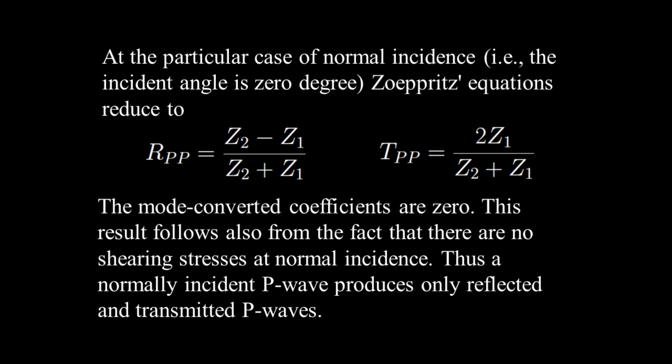Note that RPS and TPS are zero — in other words, the mode-converted coefficients are zero. This result follows from the fact that there are no shearing stresses at normal incidence. Thus, a normally incident P wave produces only reflected and transmitted P waves. These relationships are useful when analyzing P wave behavior through layer-cake media at nearly normal incidence.